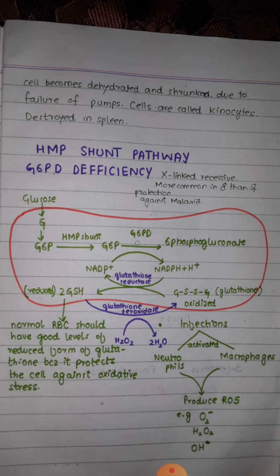As the name indicates, glucose 6-phosphate dehydrogenase is responsible for removing hydrogen atoms from glucose 6-phosphate and transferring them to NADP, converting NADP into NADPH plus H positive.